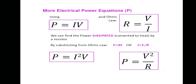So we have three equations to calculate power dissipation in a resistor: P equals IV, P equals I squared R, and P equals V squared over R. These can be used depending on the known quantities. Voltage V is measured in volts, current I in amperes, and power P in watts.